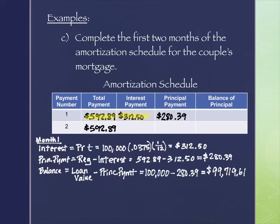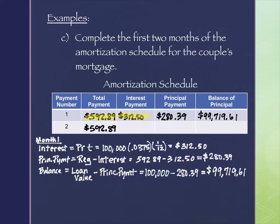After the first payment, we still owe $99,719.61. Even though we paid almost $600, the loan only went down by about $280 because most of the payment went to interest. That's how interest works on large long-term loans — it adds up so quickly, especially on a mortgage, a large payment over a long period of time.